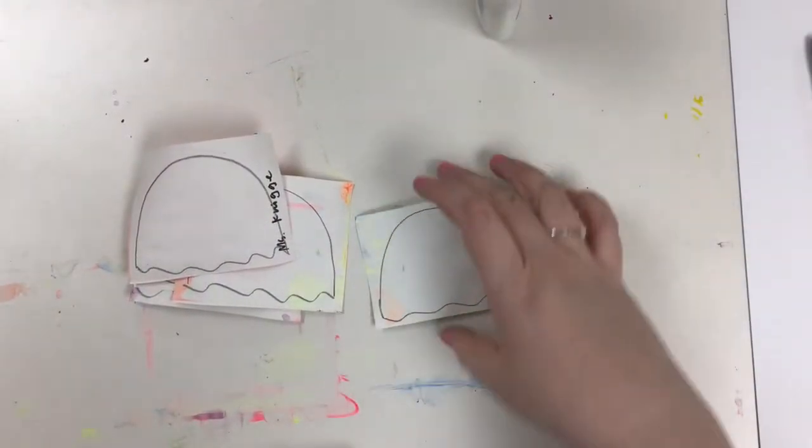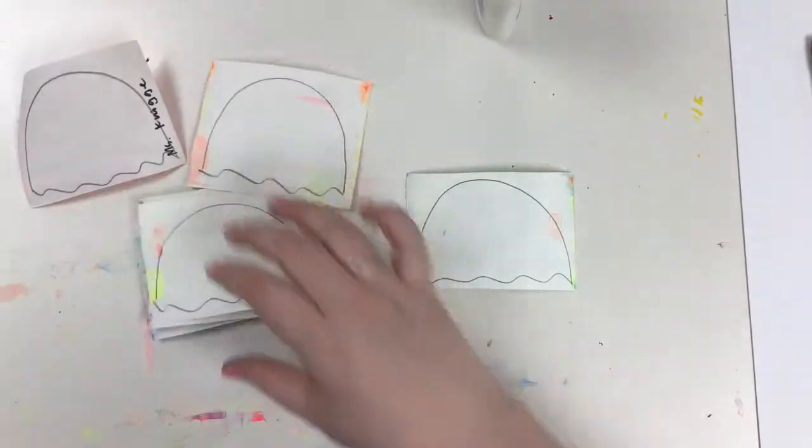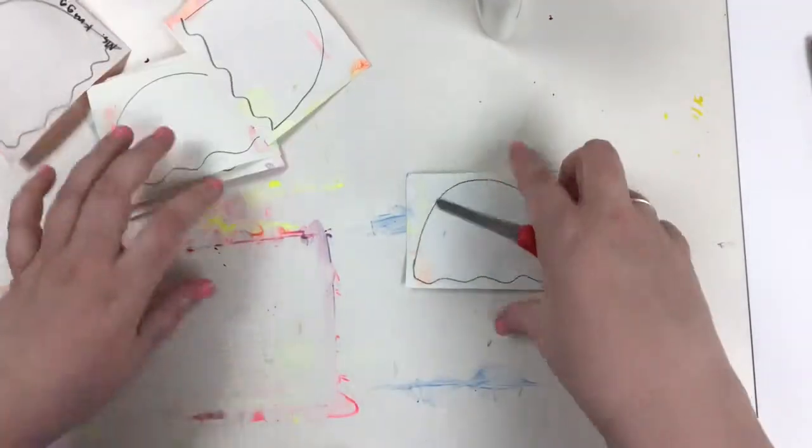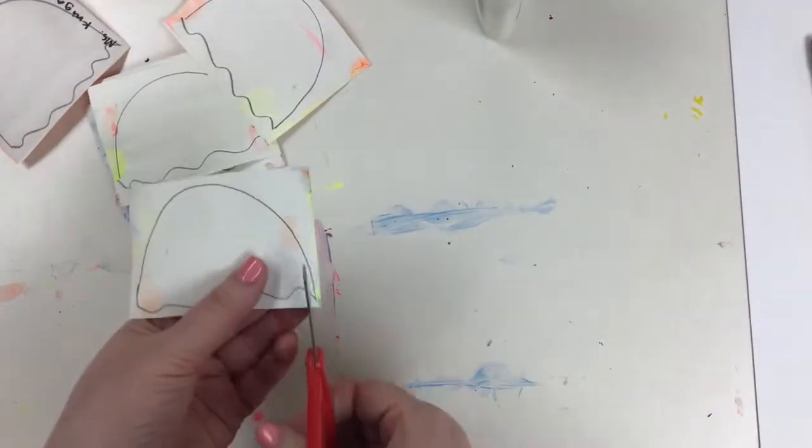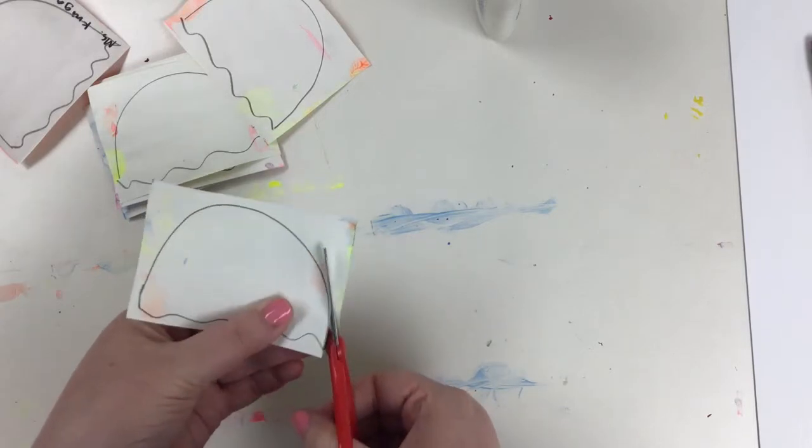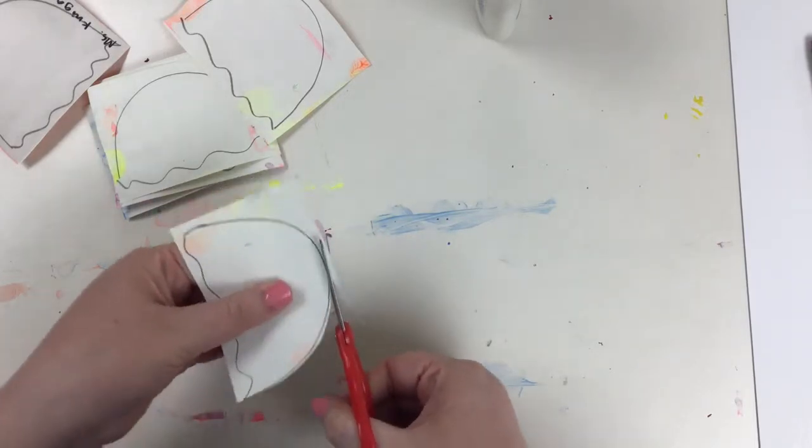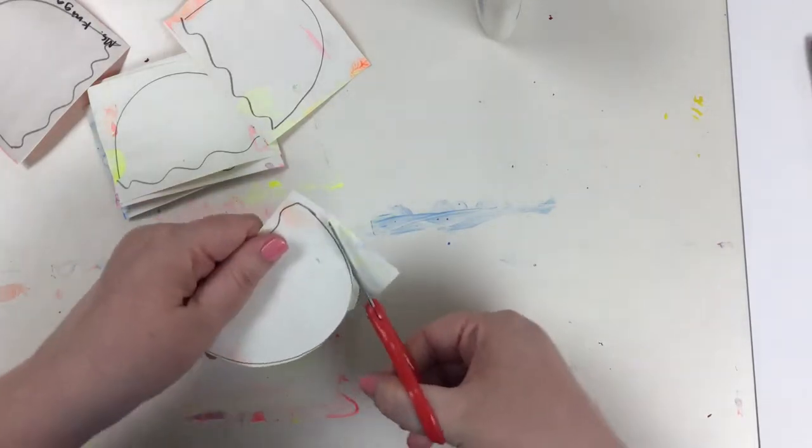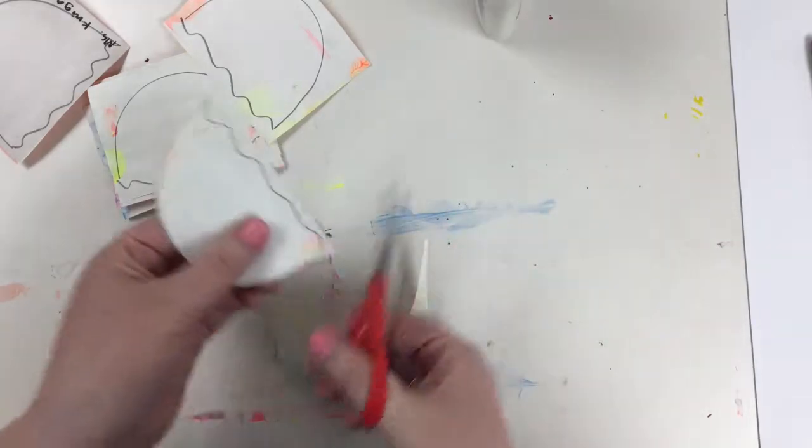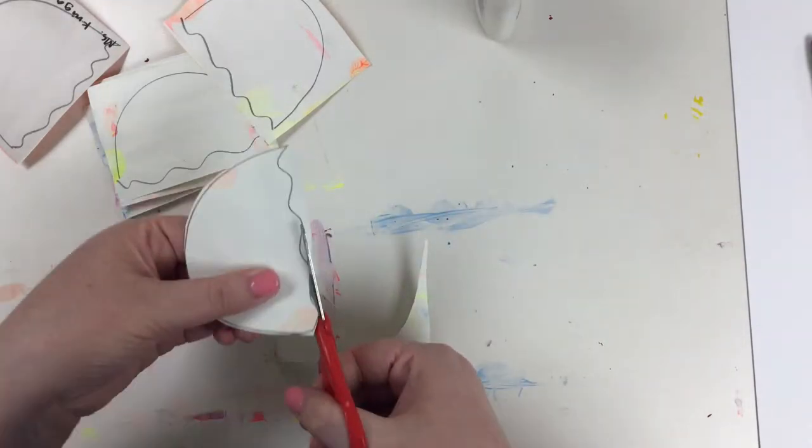Okay, I drew my ice cream scoop on the back of each one. Your next job is using your scissors to go ahead and cut out each of those scoops, okay? Slow down, take your time, do your best.